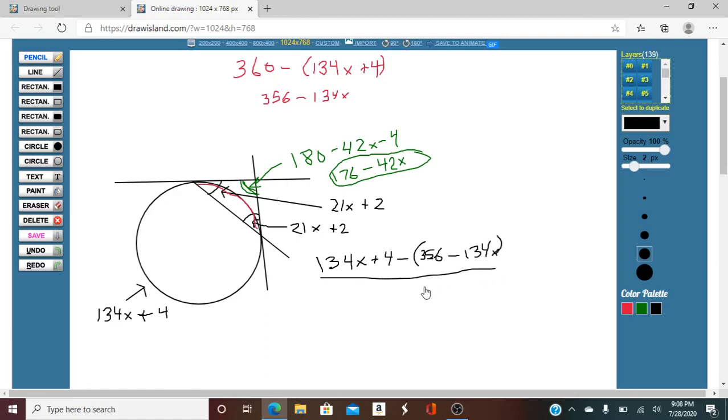So we're going to divide that by 2, and that's going to equal this 176 minus 42X.